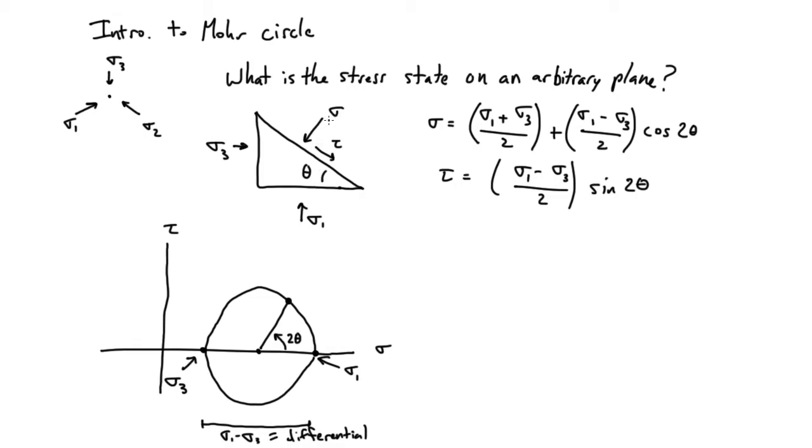The normal stress that that plane was feeling - well, we already said what that was. That's sigma 1. So for theta equals zero, which is also the same as two theta equaling zero, right here, the normal stress equals sigma 1.